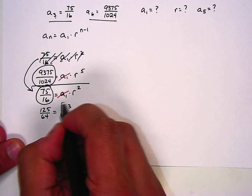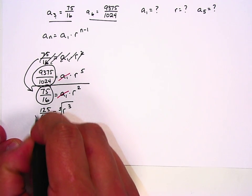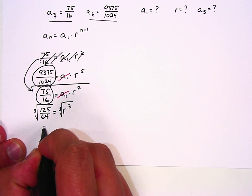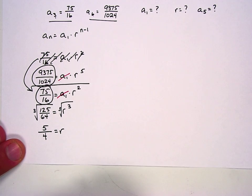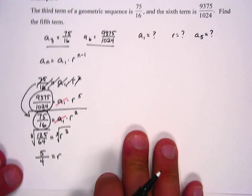Now to find r, we're just going to go ahead and take the cube root of both sides, and we get 5 over 4. Well, that's good. That tells us that the r value is 5 fourths.